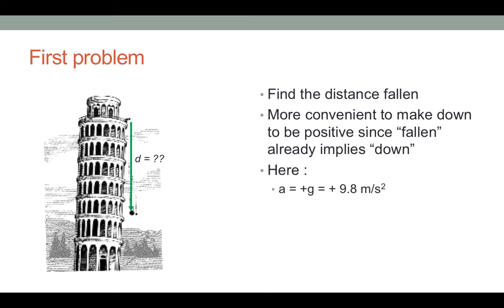So let's consider two problems. In the first problem, we are going to find the distance an object has fallen. In this particular problem, it is more convenient to make down positive, because the distance fallen already implies down.